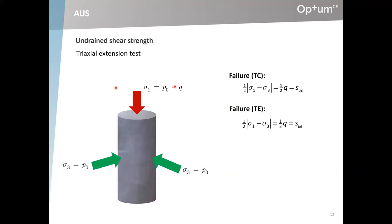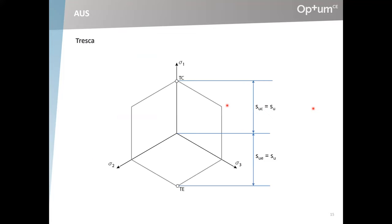So we have two different tests where we determine two strength parameters that may or may not be identical. The first question is: are they identical? The second question is: do we really expect them to be identical? I will already reveal the answer to both is no. If we assume TRESCA, we wish they were identical — that's the exact assumption behind the TRESCA criterion. But what you will see most of the time is a smaller strength in extension than in compression.